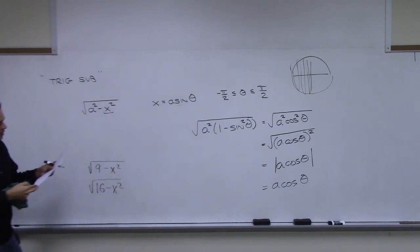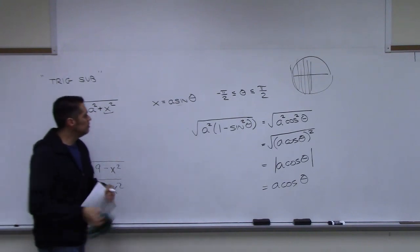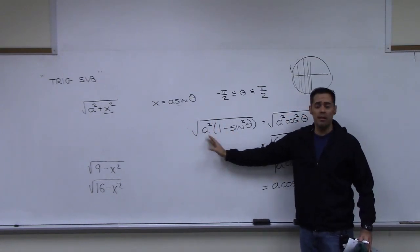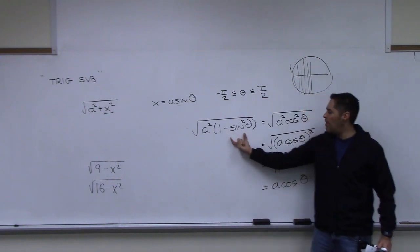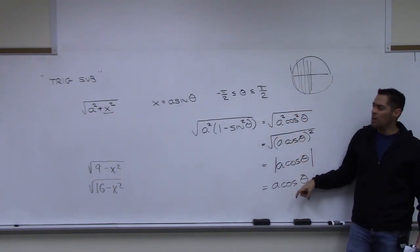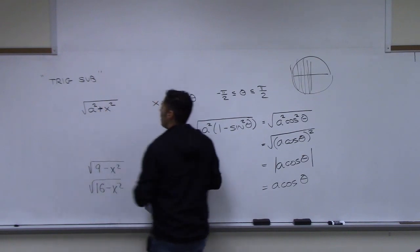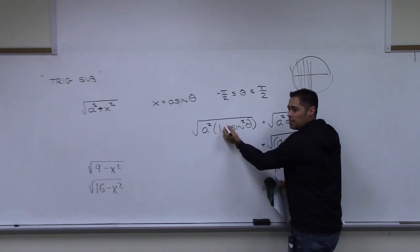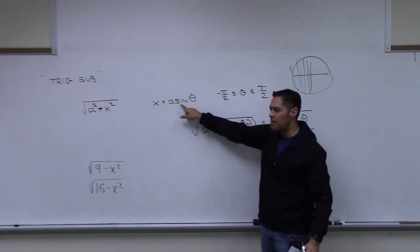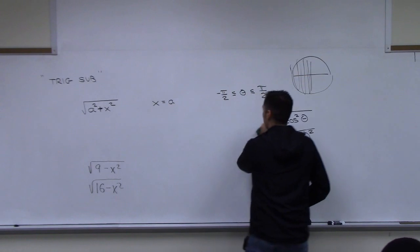If the expression has a plus instead — like a squared plus x squared — then using x = a sin theta won't work, because the Pythagorean identity won't apply. So we use a different substitution: x equals a tangent theta. We have domain restrictions there too.